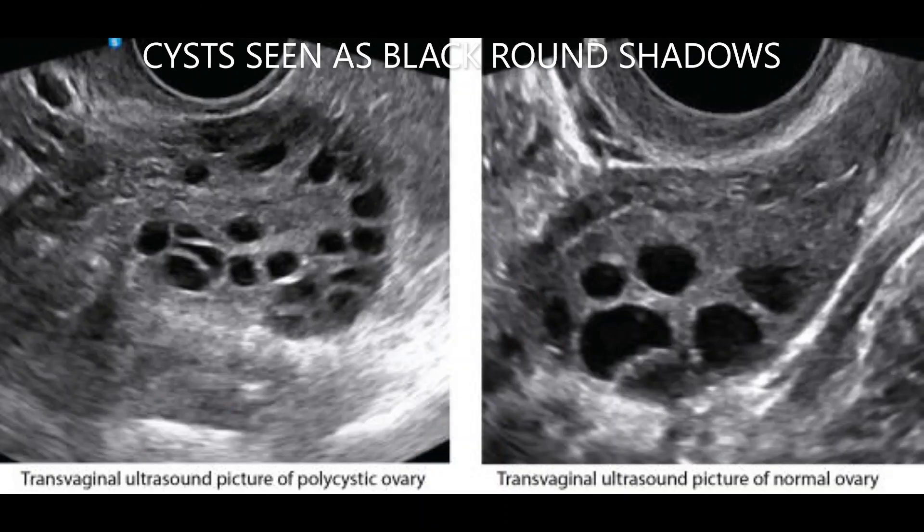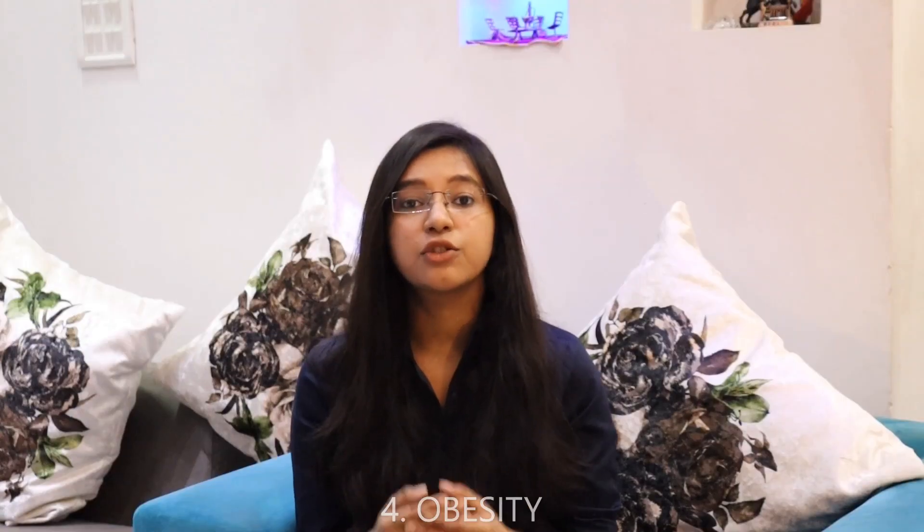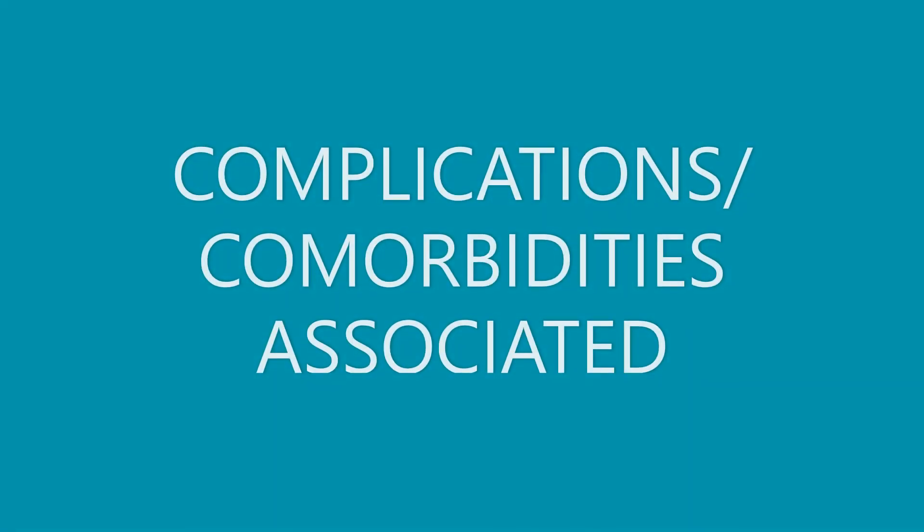The third symptom is polycystic ovary itself — the presence of cysts in the ovary, detected on ultrasound. In medical terms, we describe this as a 'string of pearls' appearance. The fourth point is obesity. Prepubertal obesity is a risk factor, and majority of women with PCOS develop obesity or become overweight, though that is not the case for all women.